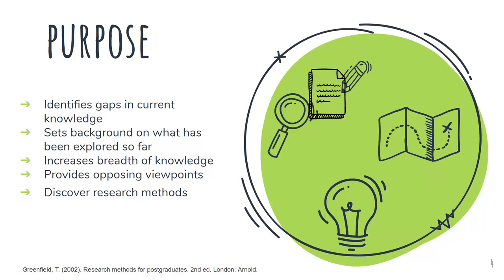There are several purposes for the lit review. It helps you identify gaps in current knowledge on your specific topic or research question. It sets the background on what has already been explored so far. It increases the breadth of knowledge that you have on your topic so that you are more fully aware of all the different pieces that may be coming into play. It also provides opposing viewpoints and informs you of debates or controversies that have arisen within your topic. It also helps you discover research methods and data that have been used to make conclusions regarding your topic. All of these together help you to have a better understanding of where and how your research fits into the scholarly conversation surrounding your topic.